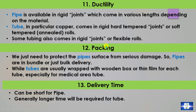Point 12: Packing. Since we just need to protect the pipe surface from serious damage, pipes are delivered in bundles or bulk. Tubes are usually wrapped with a wooden box or thin film for each tube, especially for medical-area tubes. Point 13: Delivery time. As the pipe manufacturing process is less critical than tube, the delivery time for pipes can be short, but generally longer time will be required for tubes.